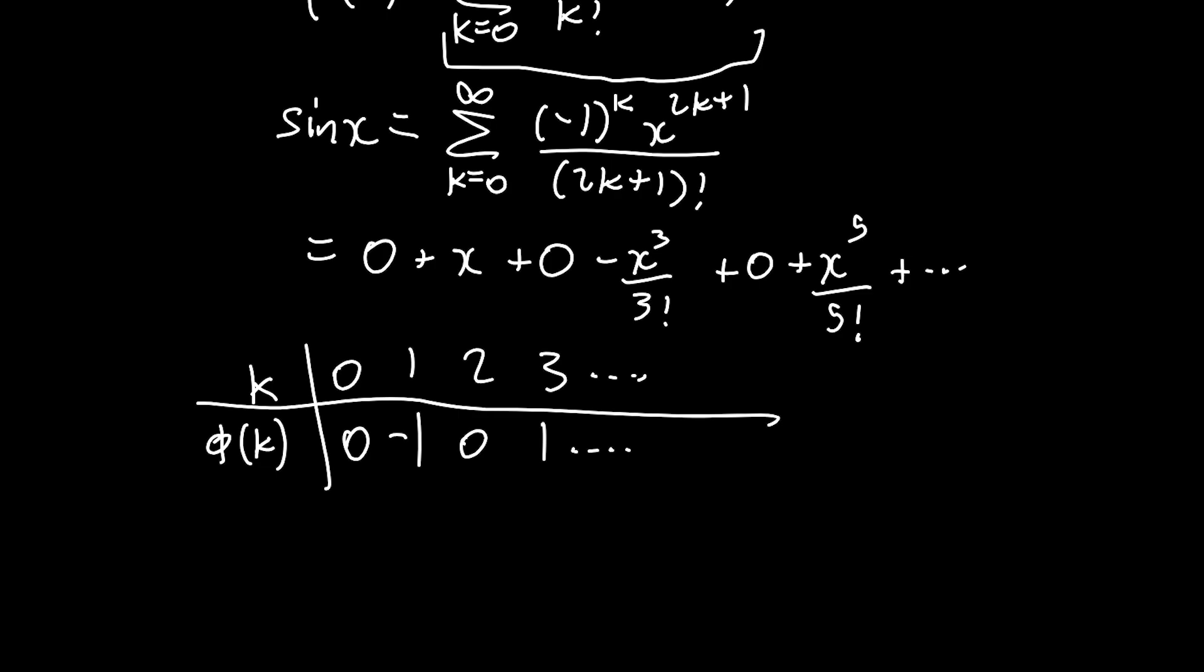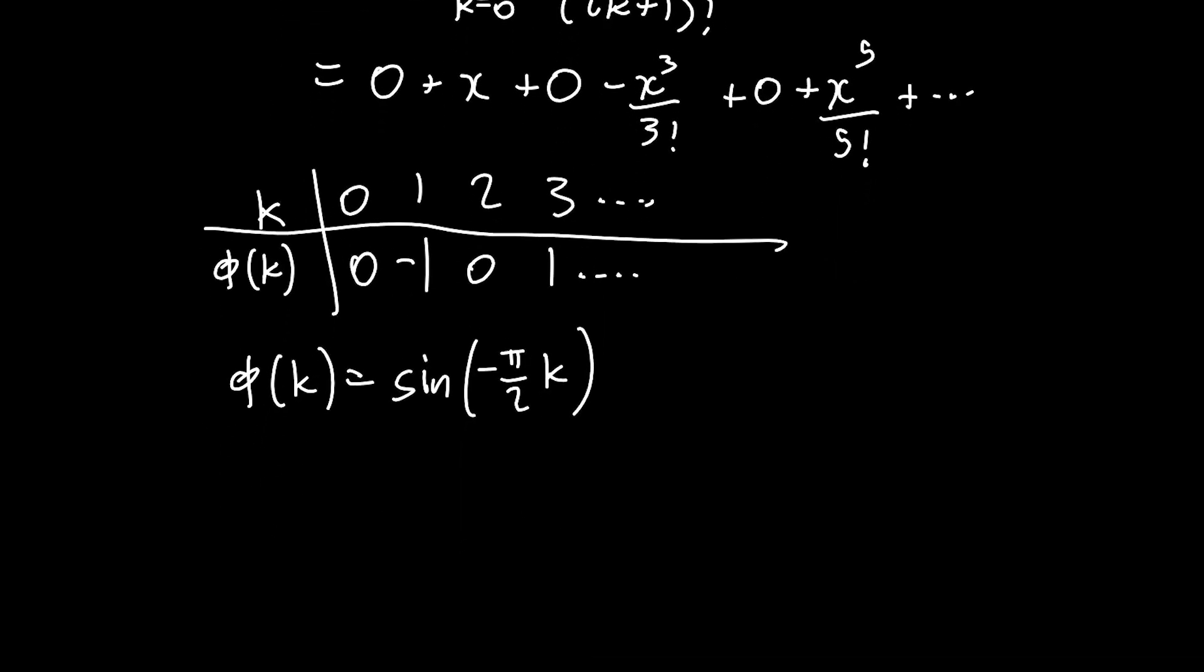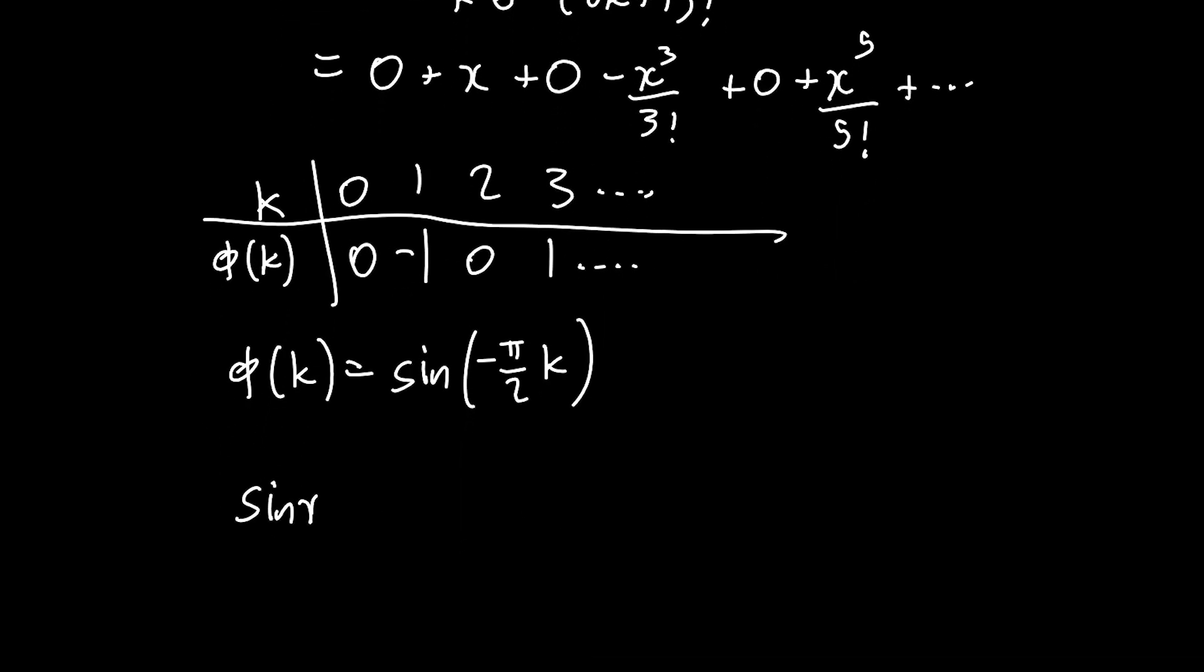If we go back to our definition of phi of k to be some continuous, well-defined function, there's only really one function that this would work for. And you can kind of see where this is going. Phi of k has to be sine of minus pi over 2 times k. And if you plug in these values of k, you can see that phi of k is what we want. So that means we can say that sine x equals the sum from k equals 0 to infinity of minus x to the power of k over k factorial, and then phi of k is going to be sine of minus pi over 2 times k. So this is basically what we wanted.